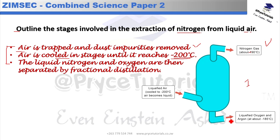To summarize the answer: air is trapped and dust impurities are removed; then we have the cooling stages repeated until the temperature is minus 200 degrees Celsius; then the liquid nitrogen and oxygen are taken to the fractional distillation column for further separation.